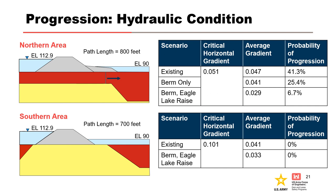When evaluating the southern area, the average foundation gradient of 0.041 is already well below the critical gradient of 0.101. The raising of Eagle Lake reduced the foundation gradient even further to 0.033. However, the probability of progression of backward erosion piping in the southern area was already very near or at 0%, so the flood-fighting efforts didn't provide a great benefit in the southern area for this node.